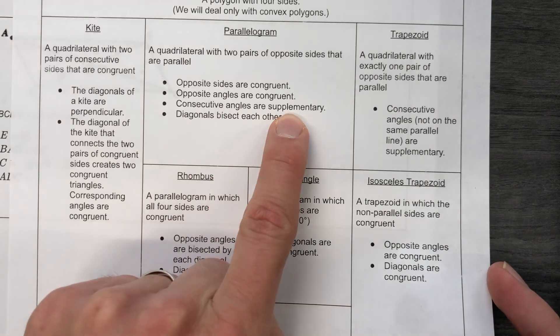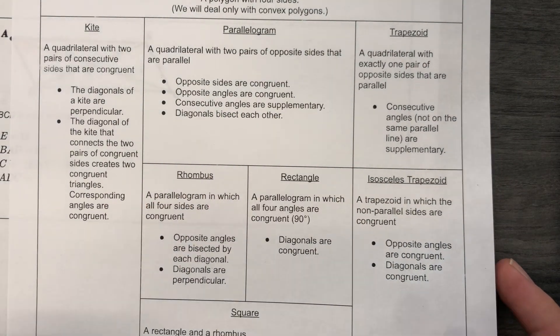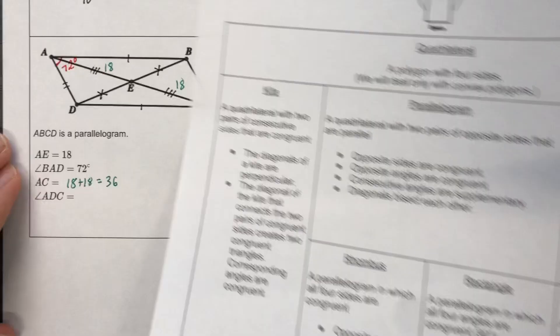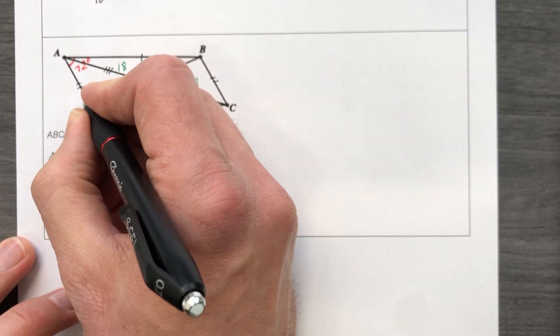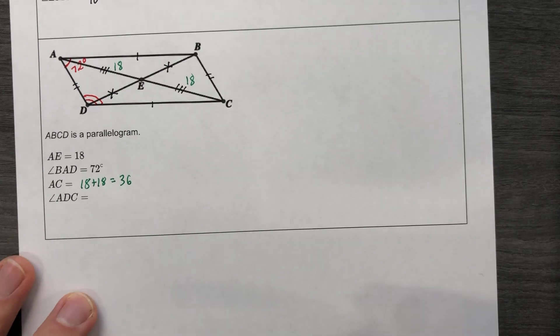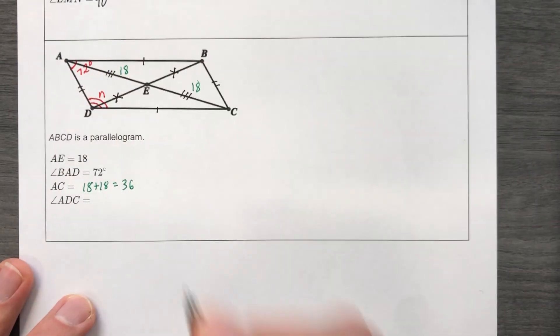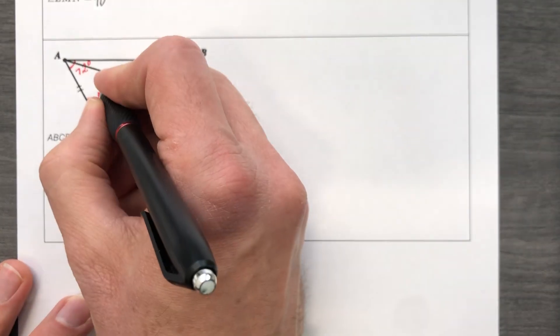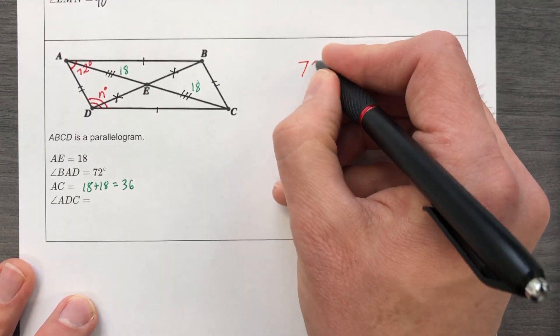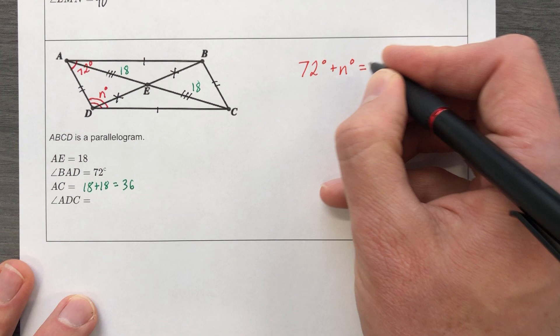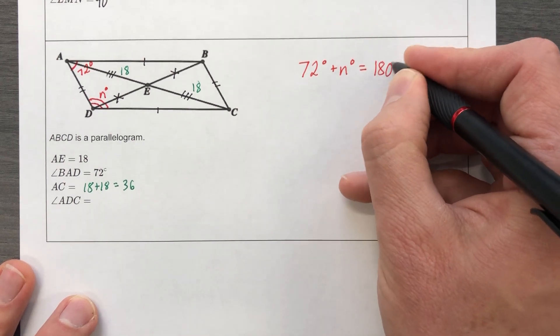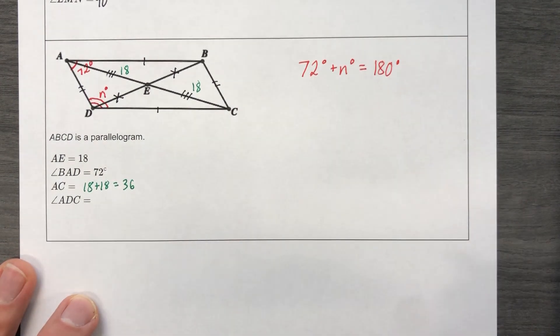So consecutive angles are supplementary, which means they add up to be 180. So whatever this is right here, I'm going to call it swoosh swoosh, and I'm going to give it a variable. I'm going to call it N, call it whatever you want, but we'll say it's N degrees. That's 72 degree angle, and that N degree angle are supplementary. They make 180 degrees. So we'll just solve that.